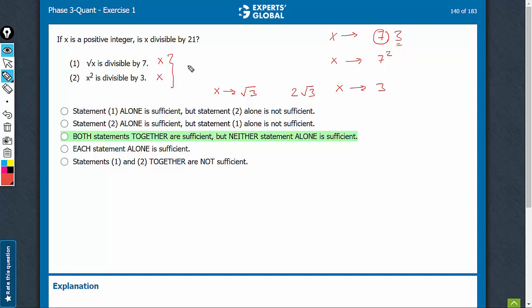On combining, we know statement 1 tells that x is a multiple of 7. Statement 2 tells that x is a multiple of 3. Therefore, on combining, we can say that x is a multiple of 21.